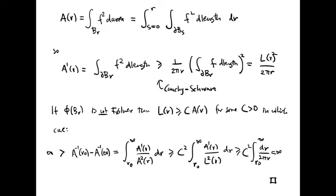We can write this as an iterated integral: the integral from s equals 0 to R of the integral over the boundary of B_s of F squared d-length, dR. Taking derivatives, A prime of R equals the integral over the boundary of B_R of F squared d-length. By the Cauchy-Schwarz inequality, this is greater than or equal to 1 over 2 pi R times the square of the integral over the boundary of B_R of F d-length, which is exactly L squared divided by 2 pi R. So we get the fundamental inequality: A prime is greater than or equal to L squared over 2 pi R.